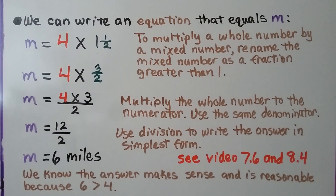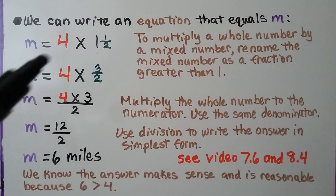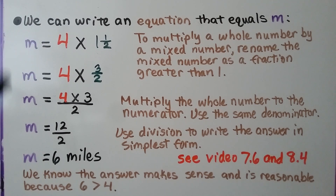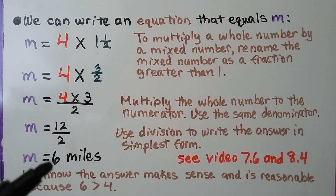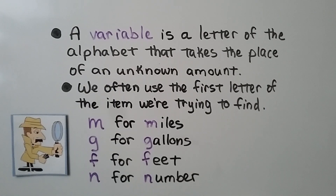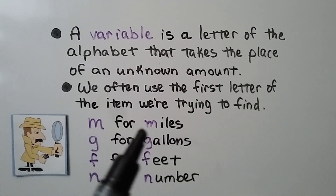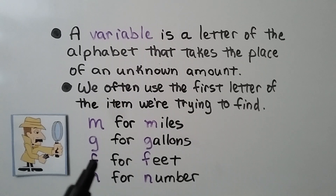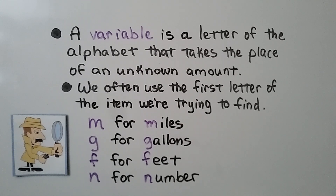The answer makes sense and is reasonable because 6 is greater than the factor 4, the whole number. We learned that when we multiply a number by a mixed number, the product will be greater than the whole number. A variable is a letter of the alphabet that takes the place of an unknown amount. We often use the first letter of the item we're trying to find — m for miles, g for gallons, f for feet, n for number. We might also see p, q, r, or x.